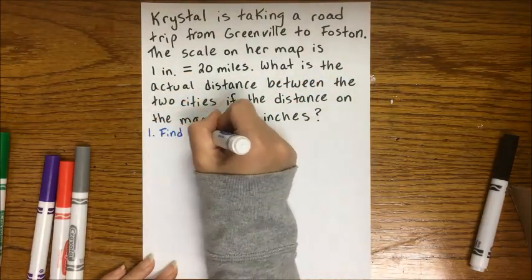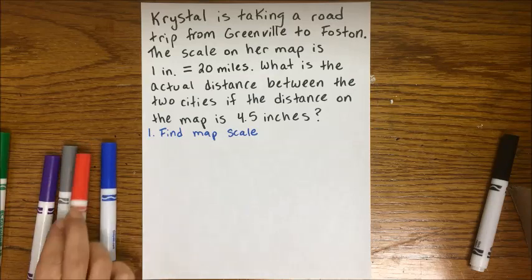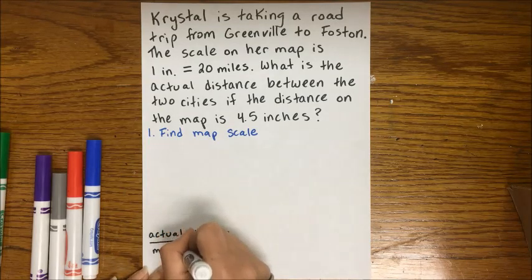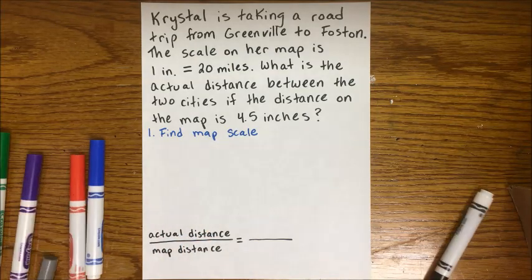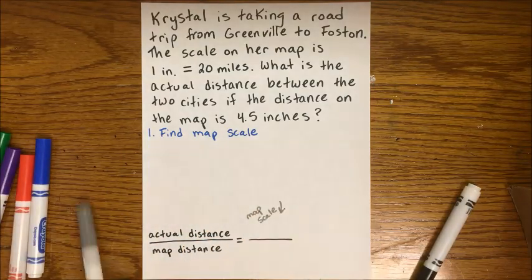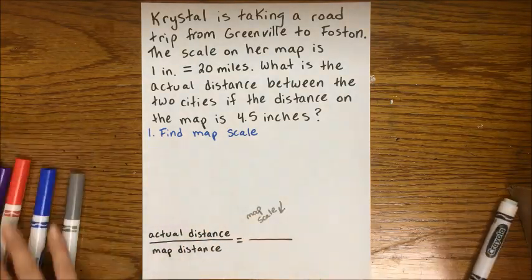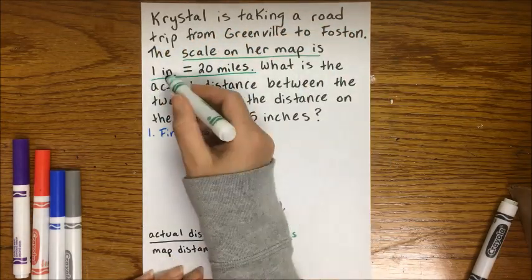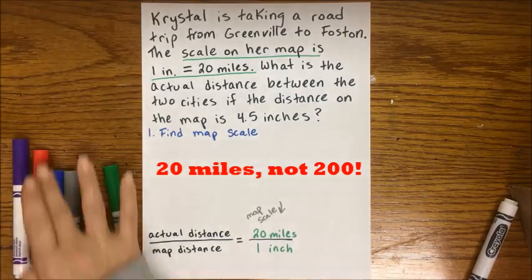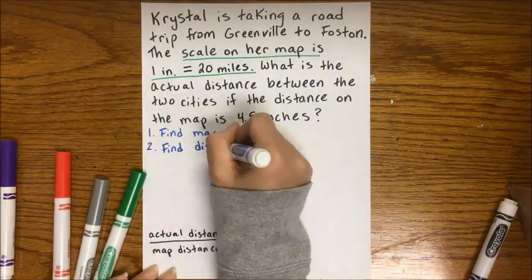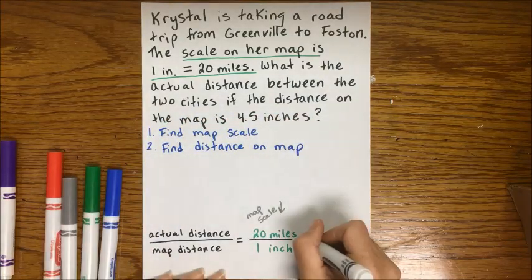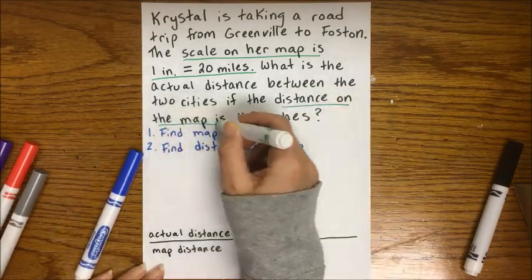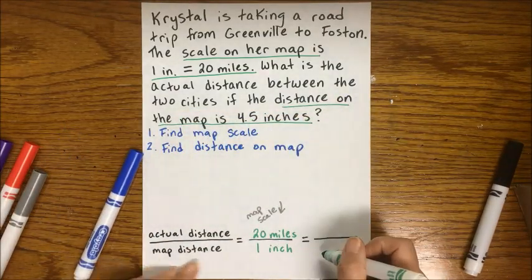Same setup — we want to find the map scale first, but this time it's already given to us in the question. We're going to compare the actual distance to the map distance, and that's called our map scale. From the question we can see that 1 inch is the same as 20 miles. The second step is to find the distance on the map, which is also given to us: 4.5 inches.